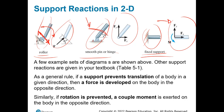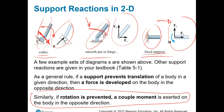This is very important and I know it takes time to memorize. You have a table that will help you at the beginning so you can get used to everything. The key rule: if rotation is prevented, a couple moment is exerted on the body in the opposite direction. If a support prevents translation, then a force is developed in the opposite direction.